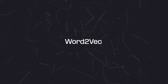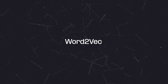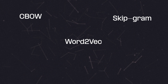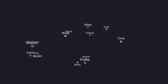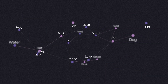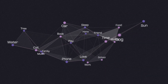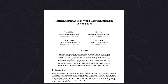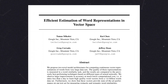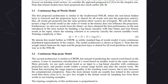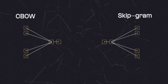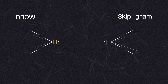Word2Vec isn't really one specific algorithm, and is more like a family of techniques for turning words into embeddings. So, how do we teach a computer to create these embeddings? In 2013, researchers at Google published a paper called "Efficient Estimation of Word Representations in a Vector Space," where they proposed two flavors for creating these embeddings: Continuous Bag of Words and the Skip-Gram model.